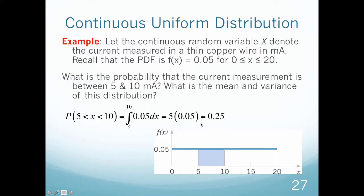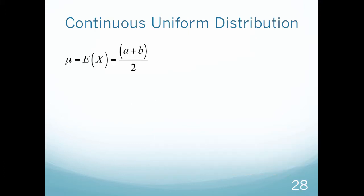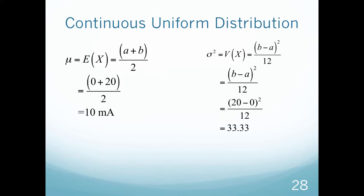I was also asked to find the mean and variance. Mu, or the expected value, equals a plus b over 2, which would be 10 milliampers. We know that's correct—the midpoint of my range of values is 10. The variance is b minus a quantity squared over 12. I plug those values in and get 33.3.